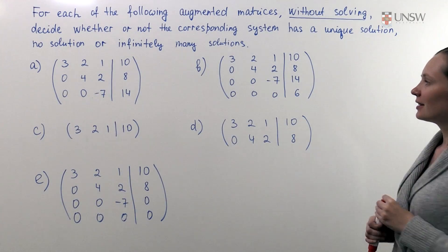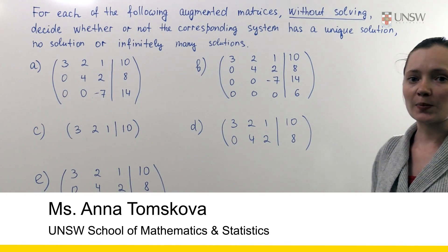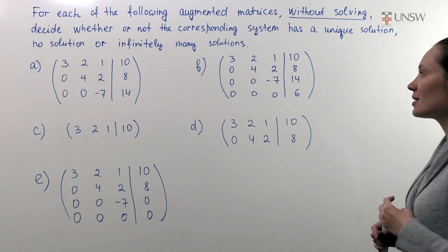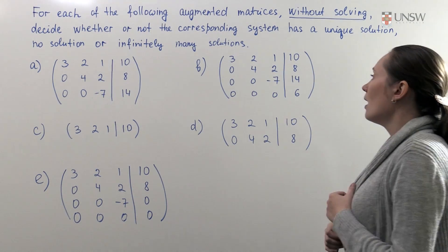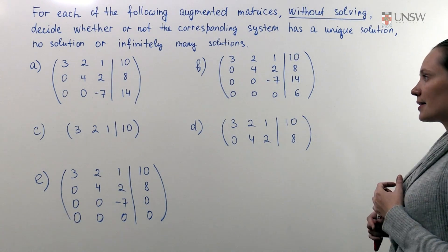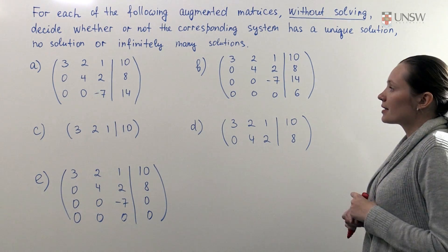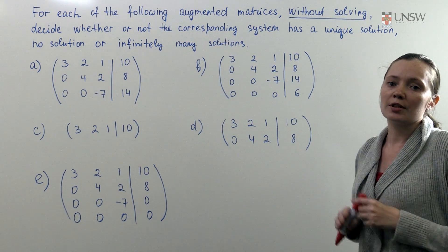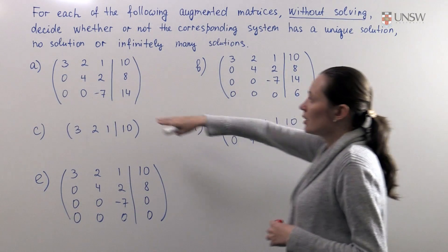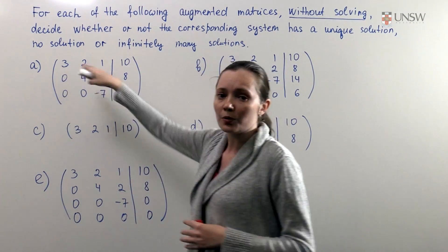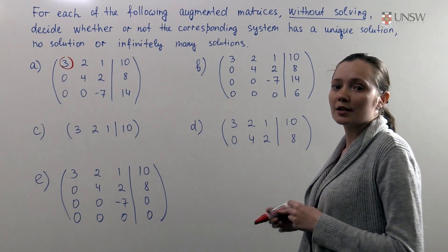For this problem we are given augmented matrices and we need to decide whether the corresponding system of linear equations has a unique solution, no solution, or infinitely many solutions. We can do this analysis only when our matrix is in row echelon form. The first step is to determine which columns are leading columns. To do this we move along each row and when we meet the first non-zero entry, that is the leading term.